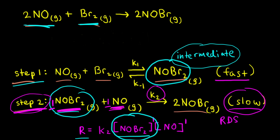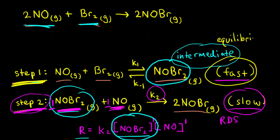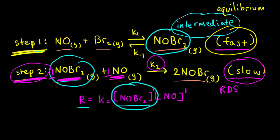We can do that by assuming that the first elementary step in our mechanism comes to a fast equilibrium. If we assume the first step comes to a fast equilibrium — a pre-equilibrium — we know that at equilibrium the rate of the forward reaction is equal to the rate of the reverse reaction.